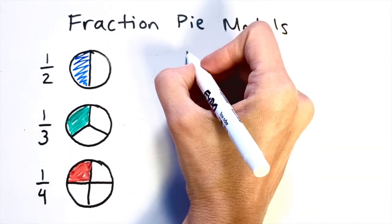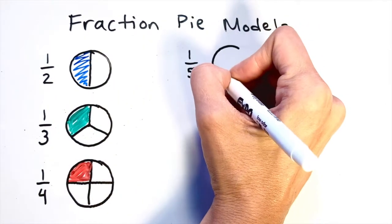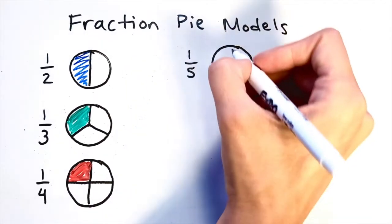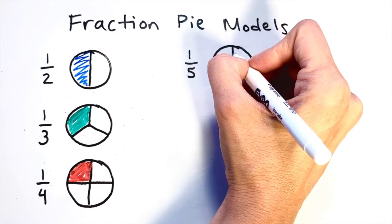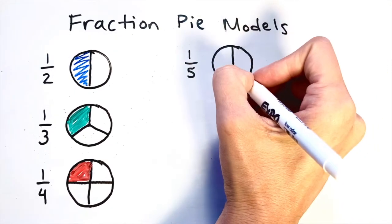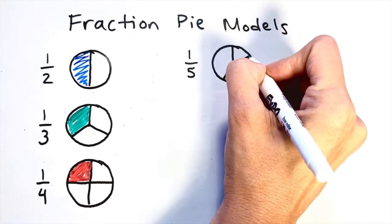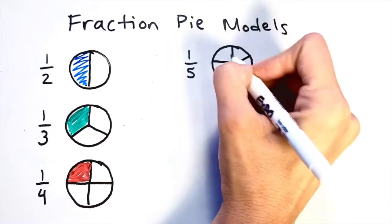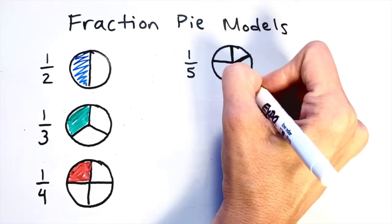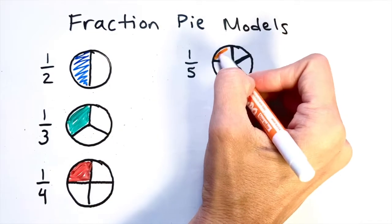Just like with bar models, fifths can be a little tricky. Start by drawing your circle, and I like to think about fifths like a starfish. Similar to thirds, draw a line down to the center of the circle, then draw the starfish's legs coming out to the side a little bit closer than with thirds, and then his arms coming out. This is all an estimation, but do your best to make the pieces equal. It looks like a starfish in the middle of a circle — that's one fifth.